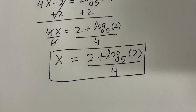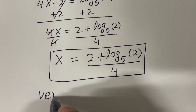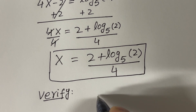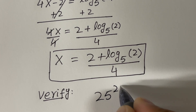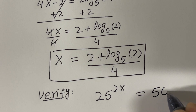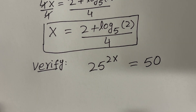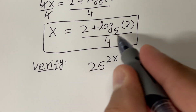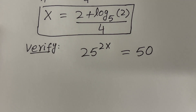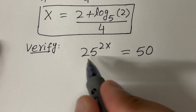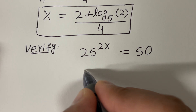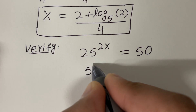This is the solution and let's verify it very quickly. The given equation is 25 raised to the power 2x, and the right-hand side is equal to 50. Let's plug in this value of x into this equation. But before that, let's write 25 as 5 raised to the power 2.